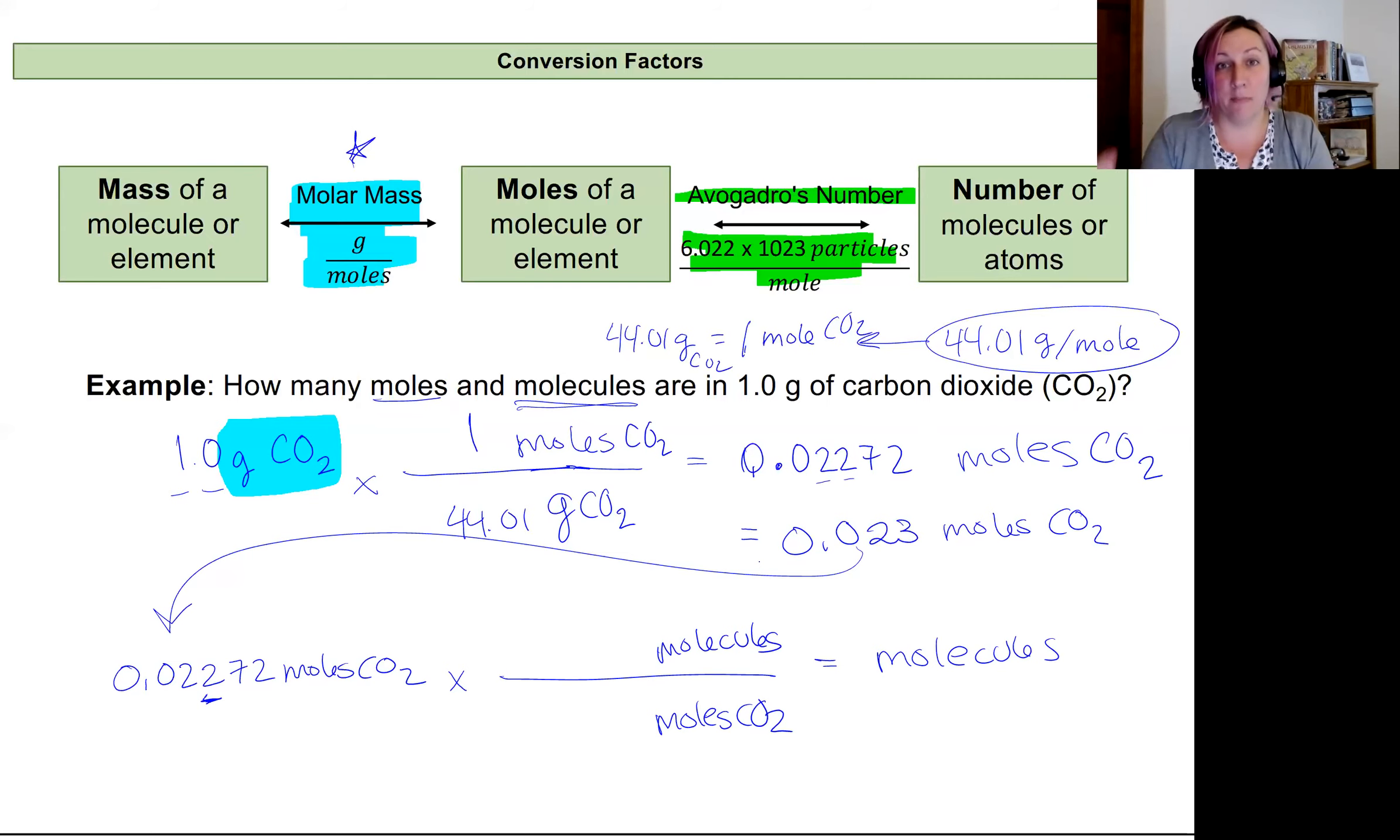And anything per mole, so in this case it's going to be molecules, is going to tell me I need to use Avogadro's number. And so Avogadro's number is going to be for every one mole of CO2, I have 6.022 times 10 to the 23rd molecules of CO2. So now my moles will cancel. I'll be left with units of molecules and I can plug this into my calculator. And when I do, I get a value that is 1.4 times 10 to the 22nd molecules CO2. And I rounded there for you to the second significant figure already.